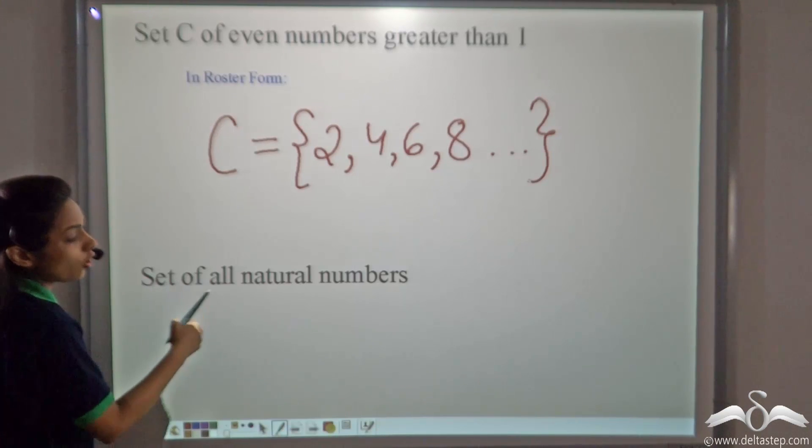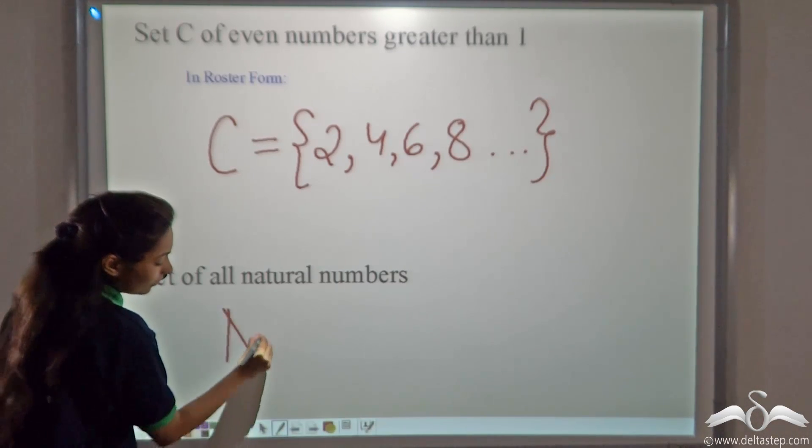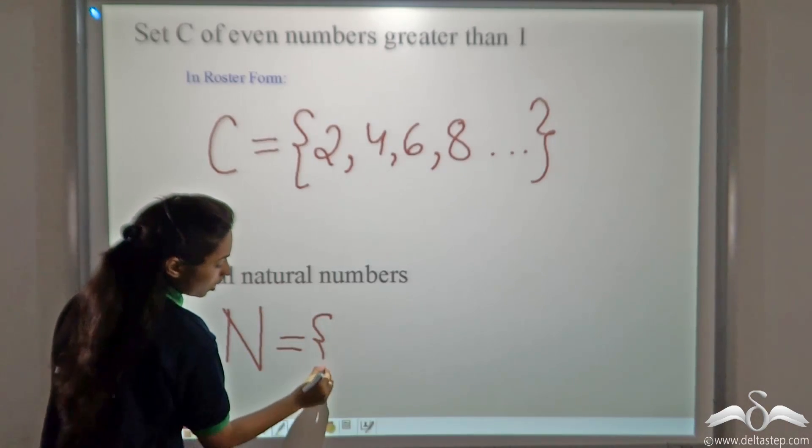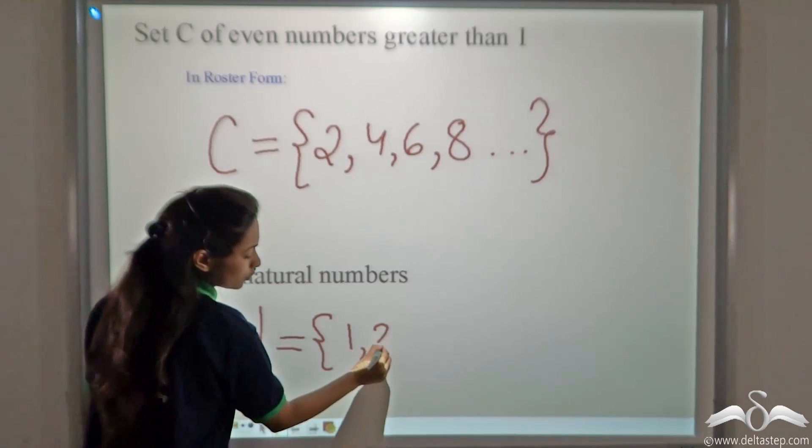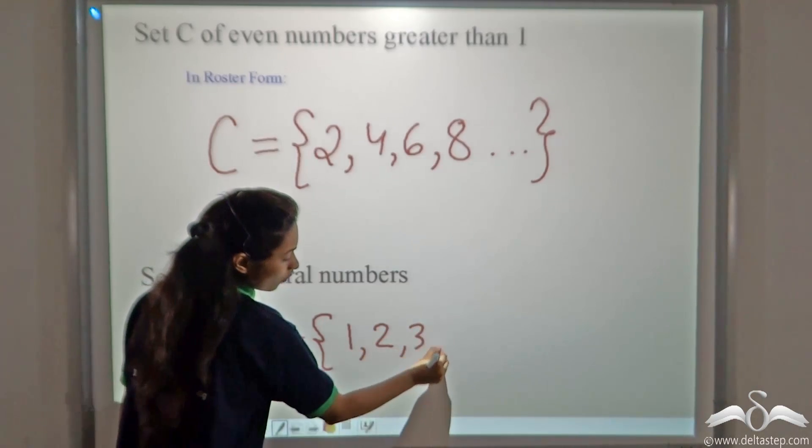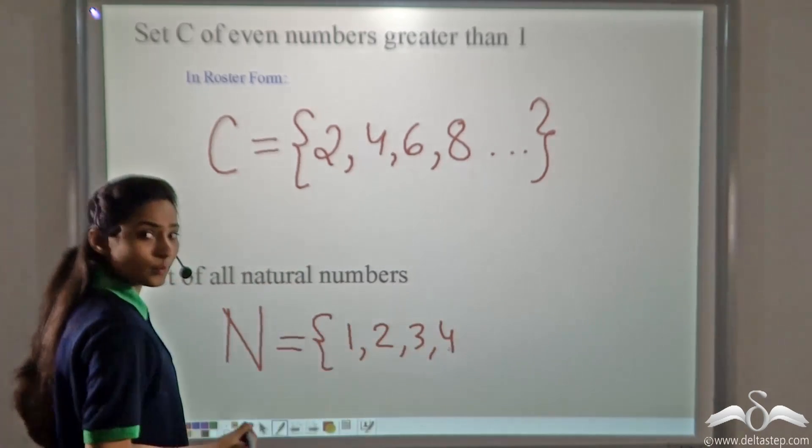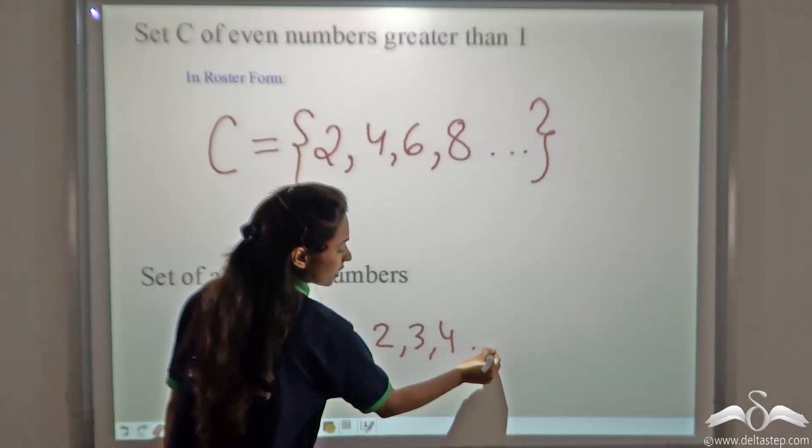Let's take the set of all natural numbers. It is denoted by the capital letter N is equal to. What are the natural numbers? 1, 2, 3, 4 and so on. It will never end. So, you can use ellipses.